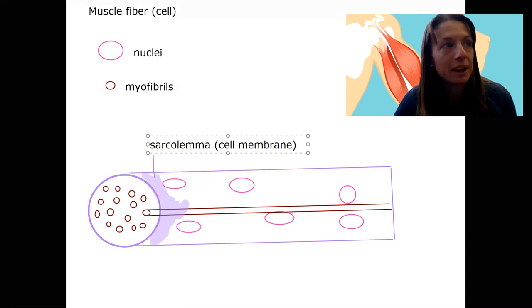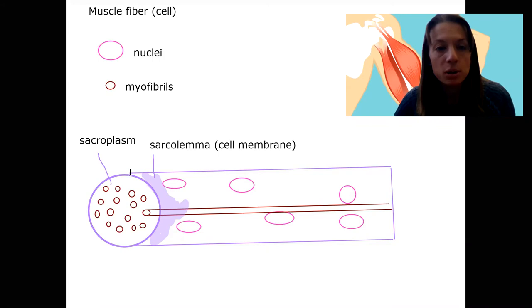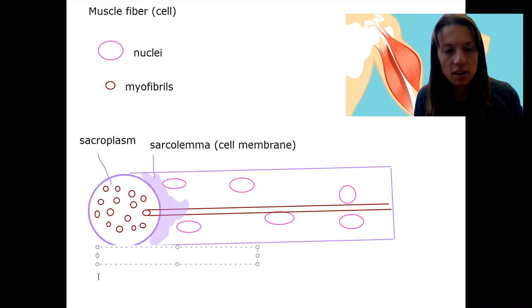There's also a special name for our cytoplasm. The cytoplasm of a muscle cell is called the sarcoplasm. Makes some sense, right? Sarcoplasm is going to be where there is the aqueous solution of the cytosol itself, as well as all of the organelles that are in a muscle cell. Myofibrils are one of those specialized structures.